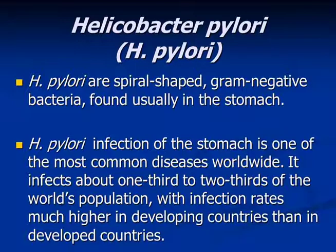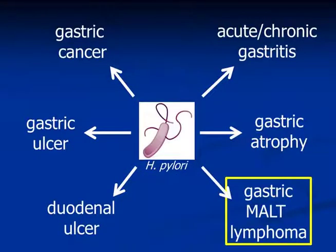H. pylori infection of the stomach is one of the most common diseases worldwide. It infects almost one-third to two-thirds of the world population, with infection rates much higher in developing countries than in developed countries. H. pylori can cause various types of diseases including gastric cancer, gastric ulcer, duodenal ulcer, acute and chronic gastritis, gastric atrophy, and gastric MALT lymphoma. I would like to focus on this gastric MALT lymphoma.